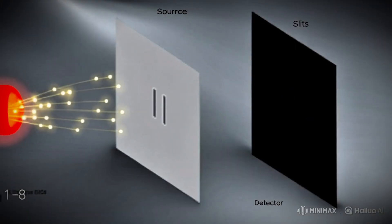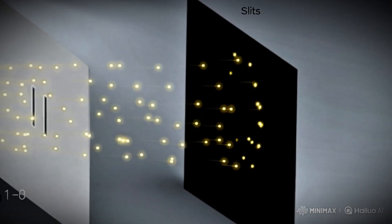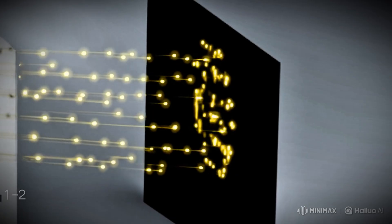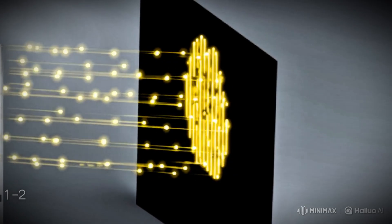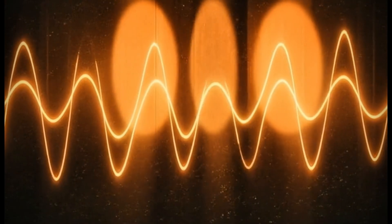Thomas Young's experiment was beautifully simple. He let sunlight pass through a small hole, then through two narrow slits and onto a screen. Instead of just two bright spots, he saw alternating bright and dark bands, an interference pattern just like ripples in water. This could only happen if light was behaving as a wave, with peaks and troughs either strengthening or canceling each other.